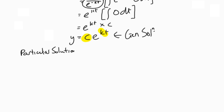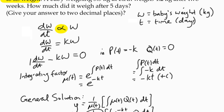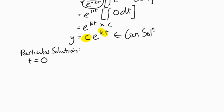We're looking for a particular solution. What information are we given? We're told that when the baby is born, t equals zero, the weight of the baby is 3.5 kilograms at birth. And then we're told that two weeks later, t equals 14, the weight is 4.2 kilograms.